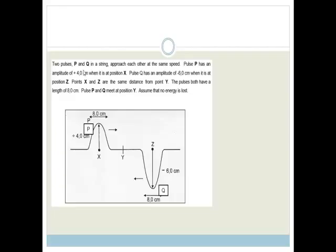Two pulses, P and Q, in a string. There's P and there's Q. Approach each other at the same speed. Pulse P has an amplitude of plus 4 when it is in position X. Pulse Q has an amplitude of minus 6 when it is at position Z. Points X and Z are the same distance from point Y. The pulses both have a length of 8 centimeters. Pulse P and Q meet at Y, assume that no energy is lost.